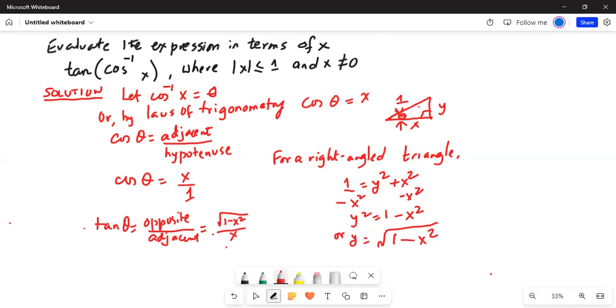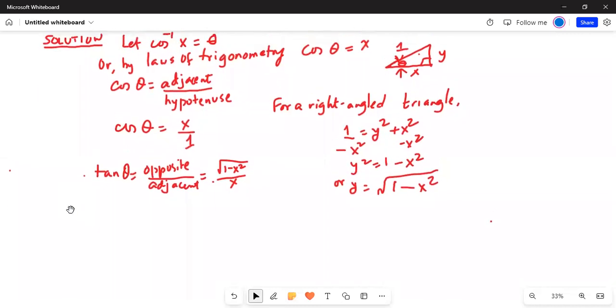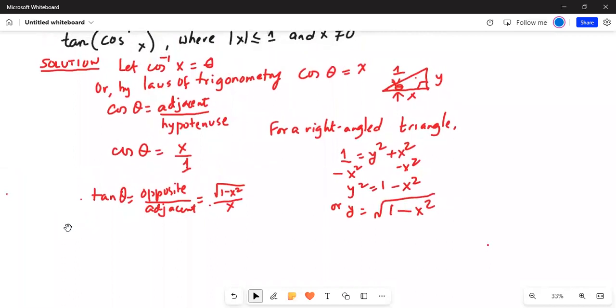Hence, the original problem is tangent of cosine inverse x, which is equal to tangent of theta, which is equal to square root of 1 minus x square by x.